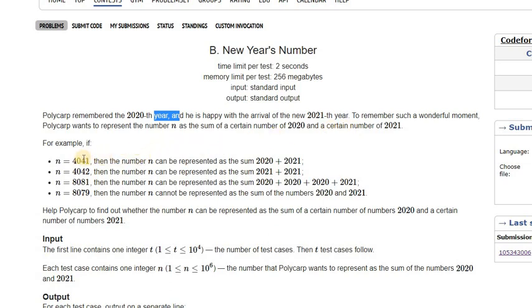For example, 4041 will be represented by 2020 plus 2021, because 1 2020 and 1 2021. 4042 can be represented by 2021 times 2. 8081 can be represented by 2021 plus 2020 times 3. But if you take a number like 8079, then we can see that it can't be represented by a sum of 2020s plus 2021s. So Polycarp's trying to figure out whether a number N can be represented by a sum of a certain number of 2020s and 2021s.